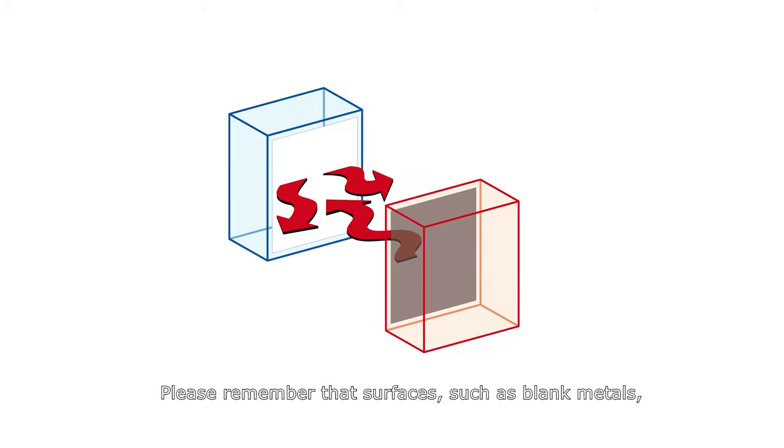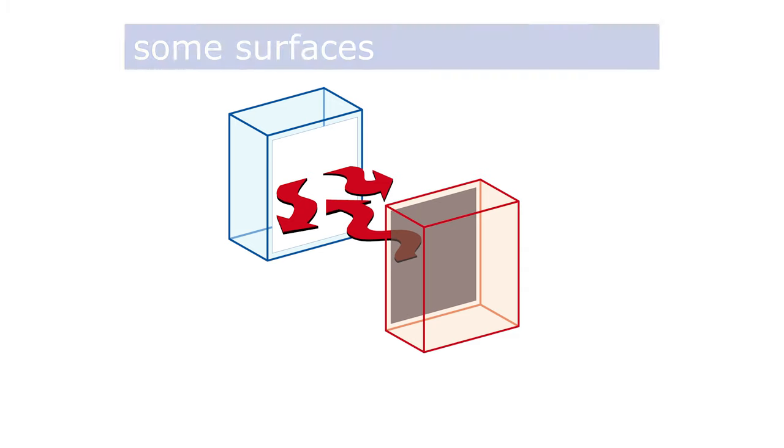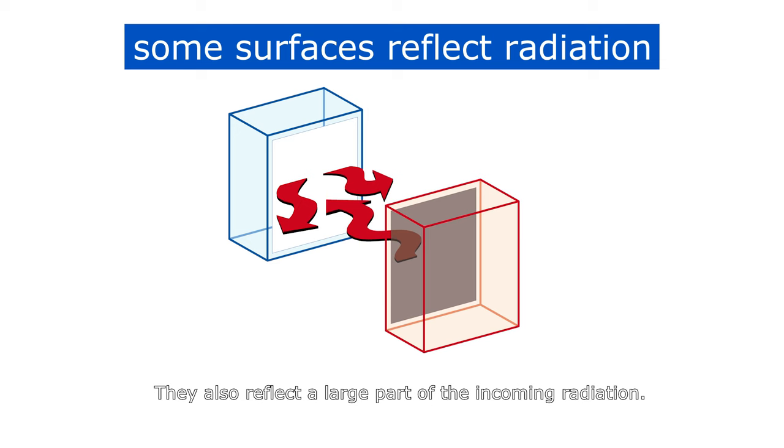Please remember that surfaces such as blank metals not only have a low emission, they also reflect a large part of the incoming radiation.